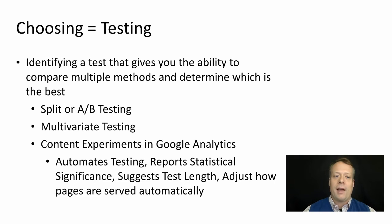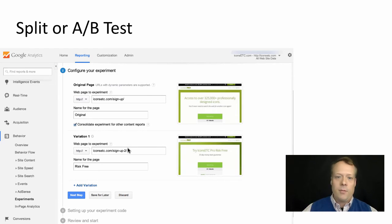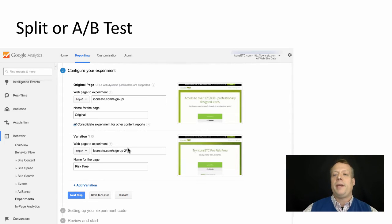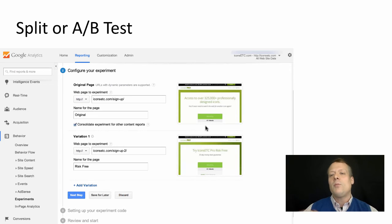We're going to talk a lot about split testing today. Split or A/B testing — here's an example from Google Analytics and their content analytics space — is when you come up with two different versions of a website, or it could be an email, social media, or whatever, and you distribute them separately to two different independent groups of people, then judge based on their click-through rates which one you like better. In this Google example, one version says 'access to over 325,000 professionally designed icons,' and the other says 'try icons that are pro risk-free.' What they're trying to figure out is which of these two pages is more likely to drive traffic to the site.